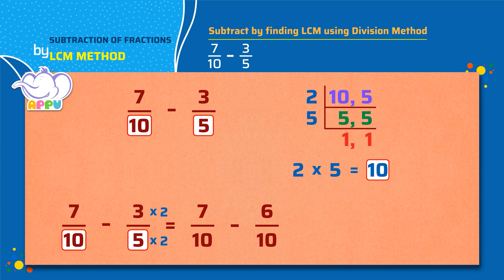Now the denominators are the same for both the fractions. That is 10. We write the denominator as 10 and we subtract the numerators. 7 minus 6 equals 1. The answer is 1 by 10. Good!